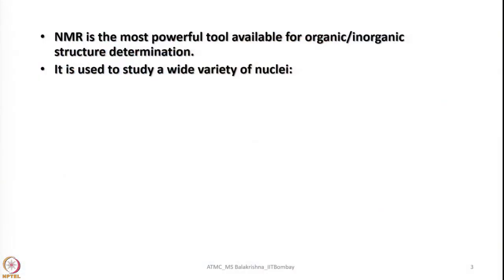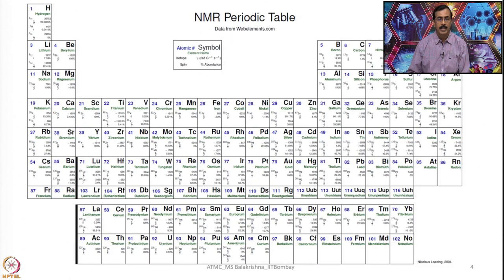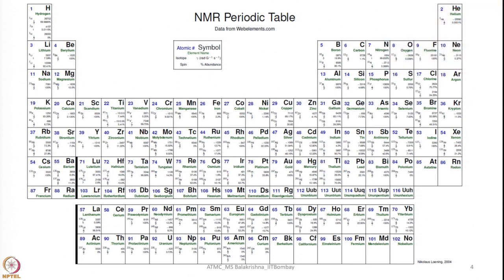NMR is used to study a wide variety of nuclei, for example 1H, 13C, 15N, 19F, 31P, and many others. This periodic table shows all possible elements which have NMR active nuclei. In fact, we can do NMR studies for most of these elements having isotopes which are NMR active, though their natural abundance varies — some are 100 percent, some in trace quantities, some around 20–30 percent.